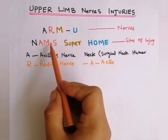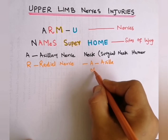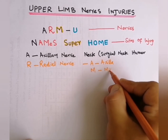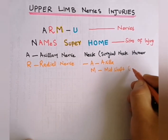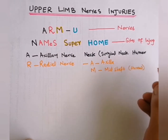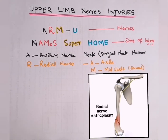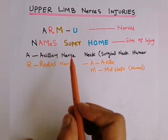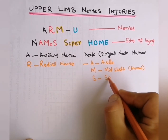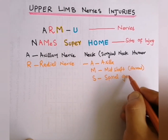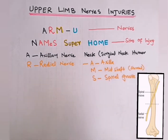M in NAMS is for mid-shaft of the humerus. Here the diagram indicates the exact site of the mid-shaft of the humerus, which damages the radial nerve. S in NAMS is for spiral groove, which is the site where the radial nerve passes, and damage to it causes radial nerve palsy.